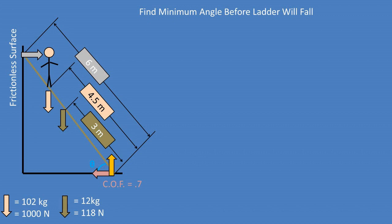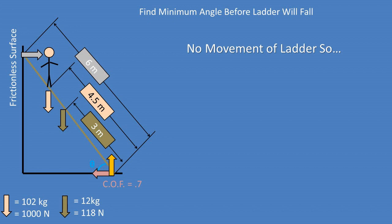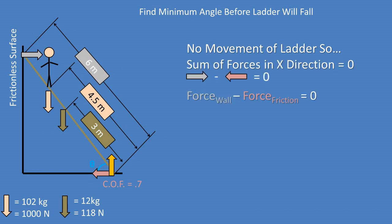To solve this problem we must first look at the free body diagram of the forces. We have five forces: one from the wall pushing back on the ladder, two from the ladder's center of mass and the person on the ladder, one from the floor pushing back on the ladder which is the normal force, and the final force is friction at the floor. Since there is no movement, the sum of forces in the x-direction must equal zero. So the force the wall exerts on the ladder minus the friction force at the base equals zero, meaning the wall force must be equal and opposite to the friction force.